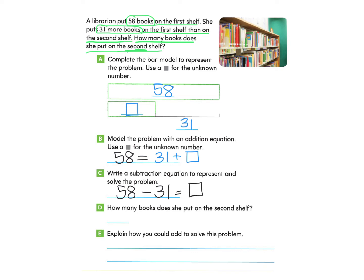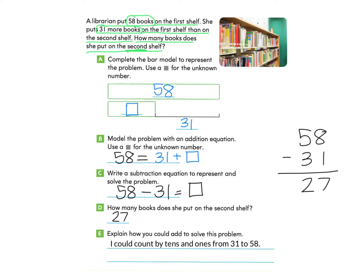Now we look at part D: how many books does she put on the second shelf? You may want to pause to do this subtraction problem: 58 take away 31. I'll do this on the side — 58 take away 31. In the ones column, 8 take away 1 is 7. In the tens column, 5 take away 3 is 2. So there are 27 books on the second shelf. To explain how you could add to solve this: you could count by tens and ones starting from 31 and go up to 58 to find the missing number.